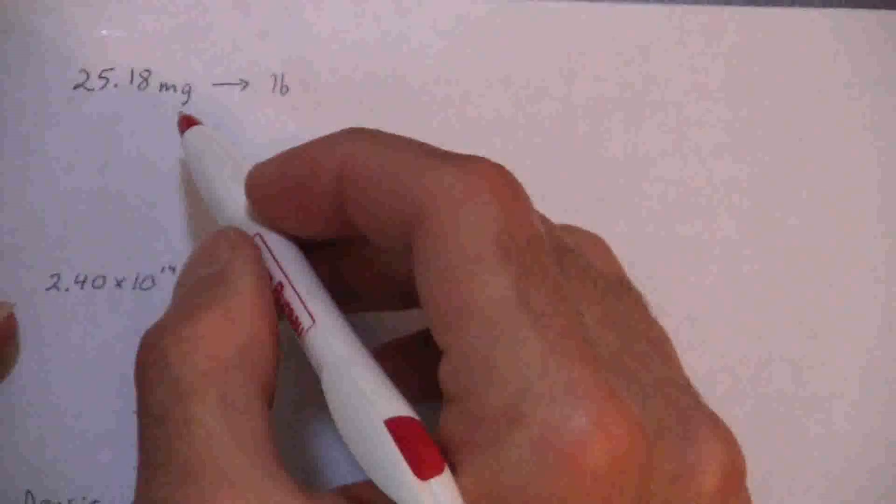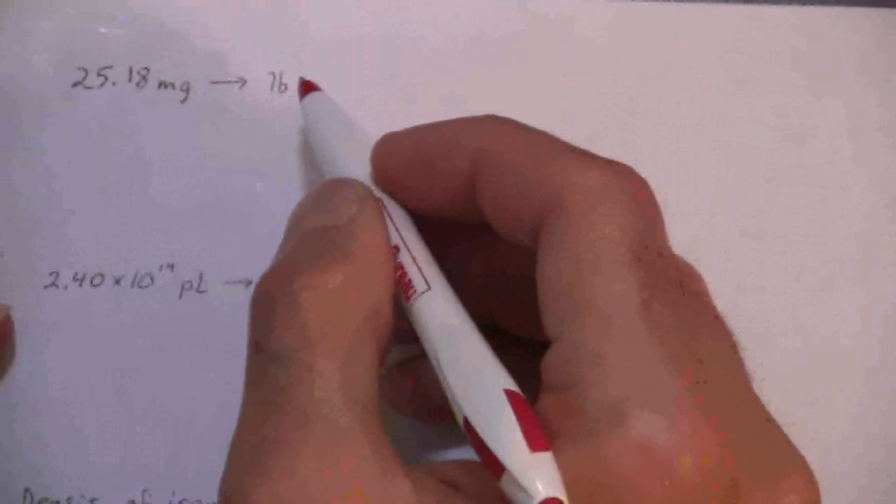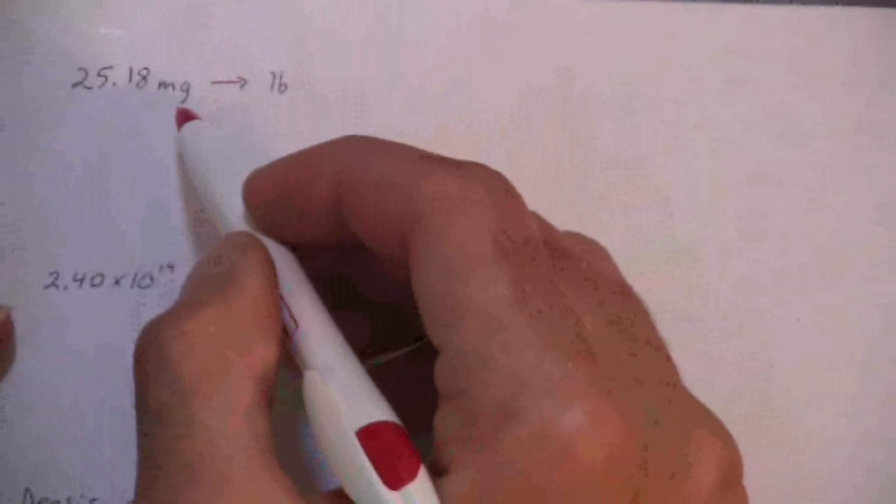Okay, so the first thing we want to do with any of these kind of problems is say, all right, what are we given and then where do we want to get? All right, so this one's pretty straightforward. We're given milligrams and we want to get the pounds.